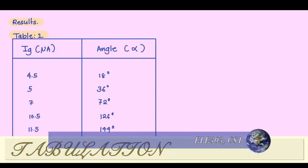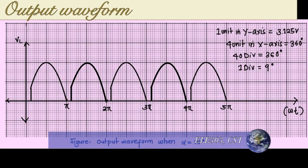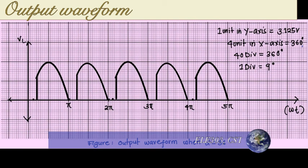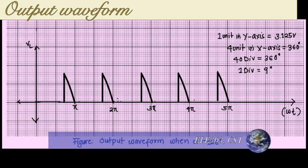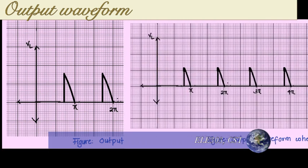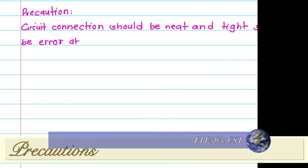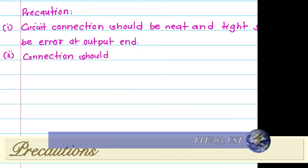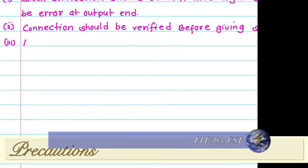This is our recorded table for firing angle and gate current of the experiment. This is the graph for firing angles of 18 degrees, 36 degrees, 72 degrees, 126 degrees, and 144 degrees — all supported in the graph of the experiment. When it comes to precautions: circuit connections should be neat and tight so that there won't be errors at the output. Connections should be verified before giving supply, and always use rated elements to prevent damage.